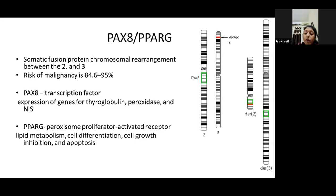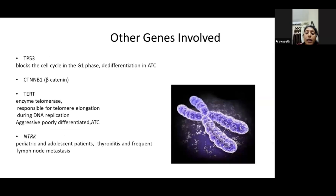PAX8/PPARγ is also a chromosomal rearrangement fusion. The risk of malignancy with this gene is close to 95%. PAX8 is a transcription factor that promotes DNA proliferation; thyroglobulin, peroxidase, and NIS expression are all amplified with a PAX8 mutation. PPARγ (peroxisome proliferator-activated receptor gamma) activation causes cell differentiation and inhibits apoptosis. p53 blocks the cell cycle in G1 phase. TERT (telomerase gene) is responsible for telomere elongation and DNA replication, and is mostly involved in poorly differentiated and anaplastic carcinomas.